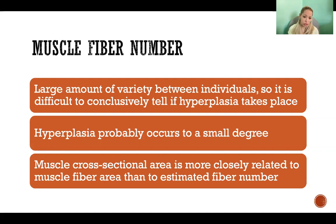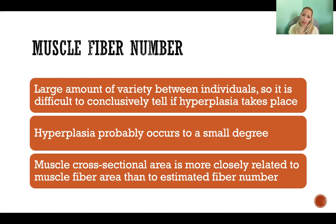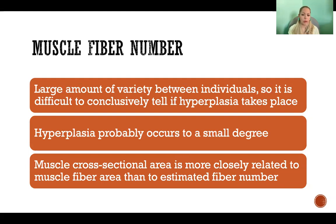It's also difficult to measure and test fiber number in response to different types of training. There is variable evidence — it's likely that hyperplasia is probably happening to a small degree, but again, it is not definitive. There's a huge amount of variety from one individual to another, which makes it even more difficult to study the changes because we can't assume that on average we have a set number of fibers in a given muscle, since it's so extremely different from one person to another.